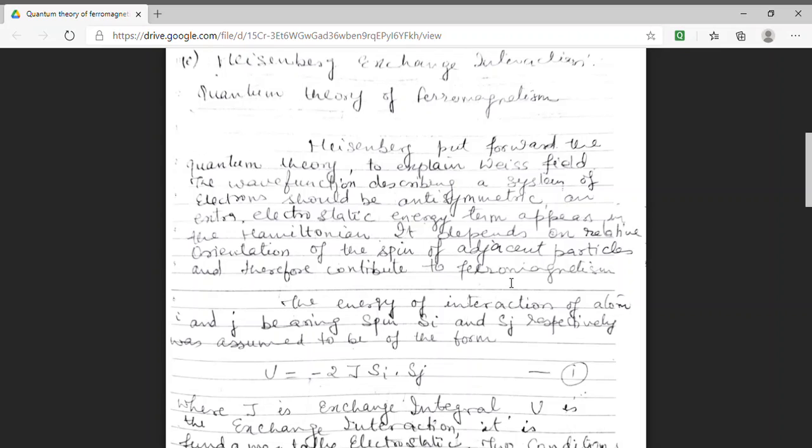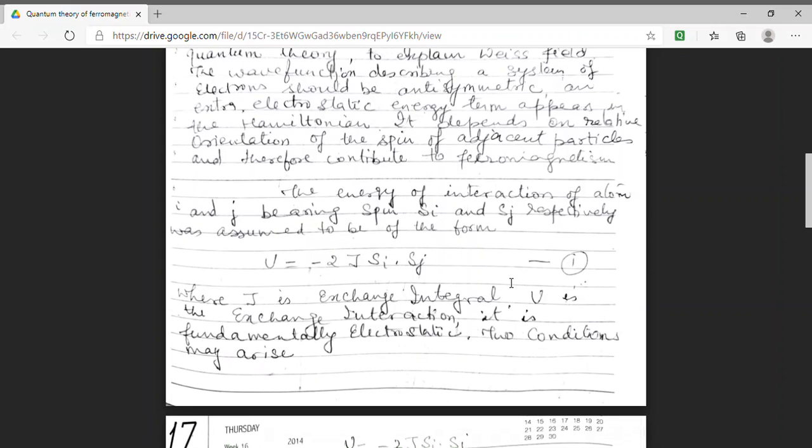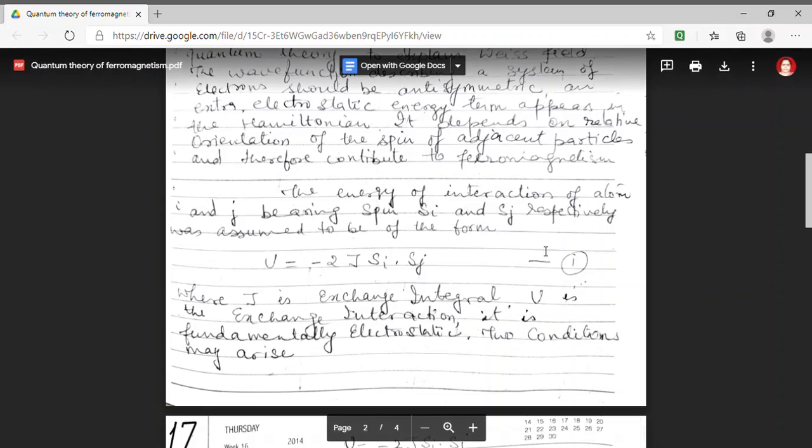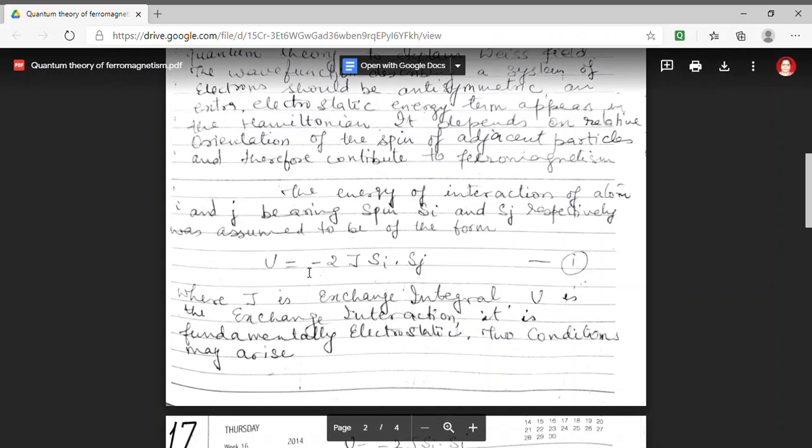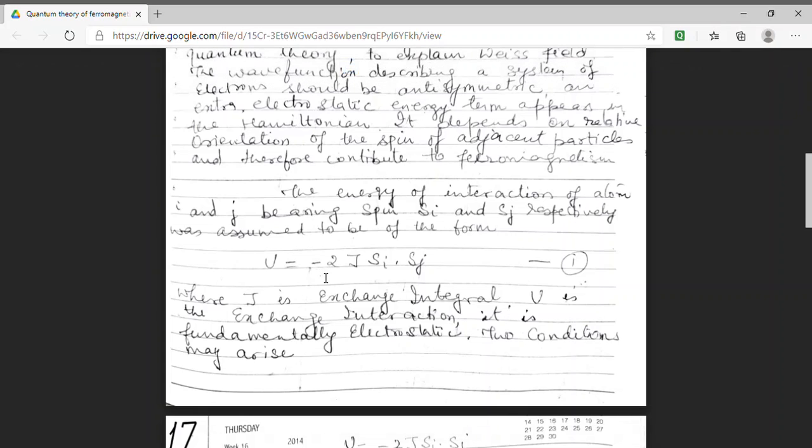Here I am assuming only two spins. I am assuming the atom labeled by indices i and j and let these atoms have spin s_i and s_j. We will assume only the interaction between nearest neighbors and higher order interaction will be ignored. Assuming this, we have the interaction energy between the spins to be of the form U equals minus 2J s_i dot s_j. Here J is exchange integral. This U term is electrostatic in nature and it is exchange interaction between spins.